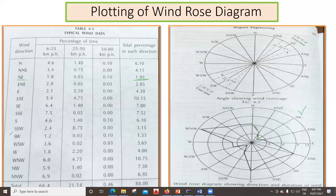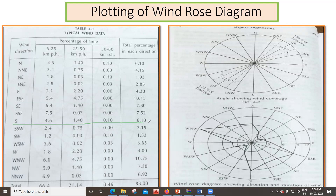For south, the value given is 6.10. Since the second circle represents 6, the point should lie just beyond that circle in the south direction. However, looking at the source diagram, it appears they have joined the point incorrectly for the south direction — this seems to be a printing mistake in the textbook. Don't follow that particular marking.